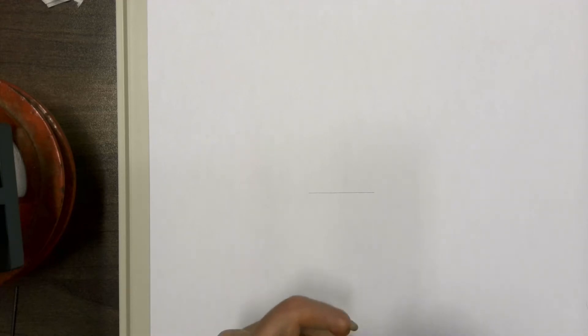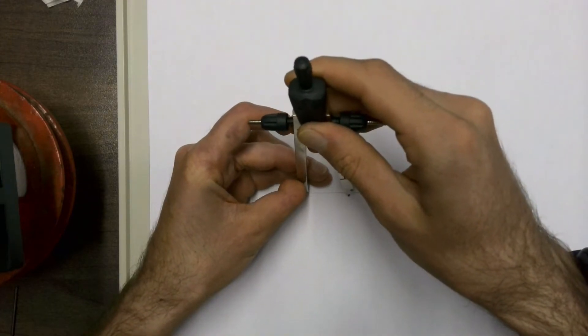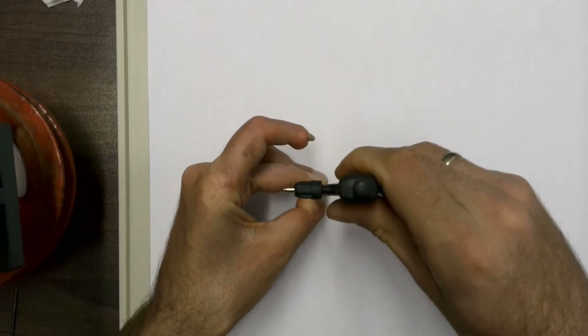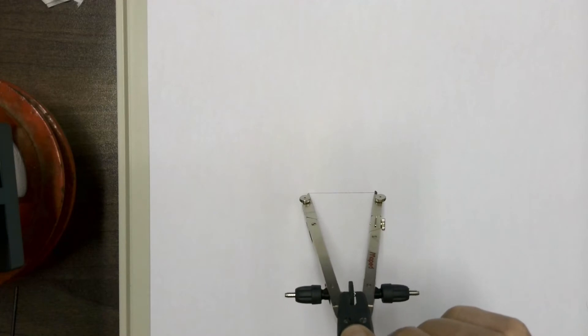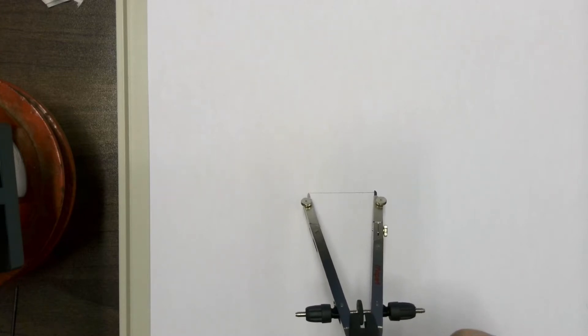To start your construction, take your compass and place it on the length of your baseline. Make sure that for the entire construction of this pentagon, you leave your compass on that measurement.